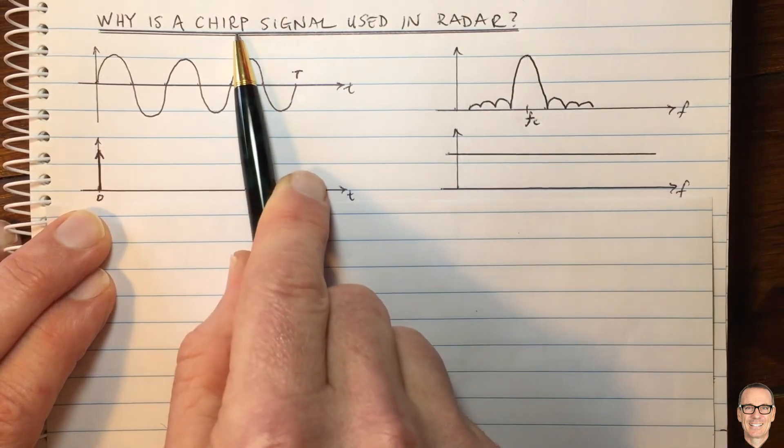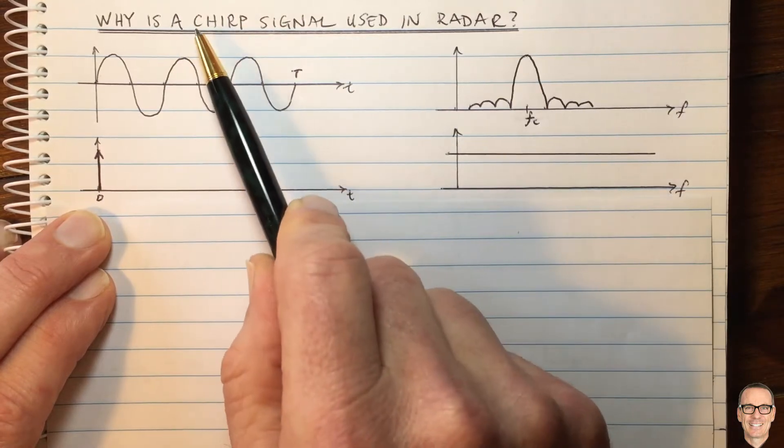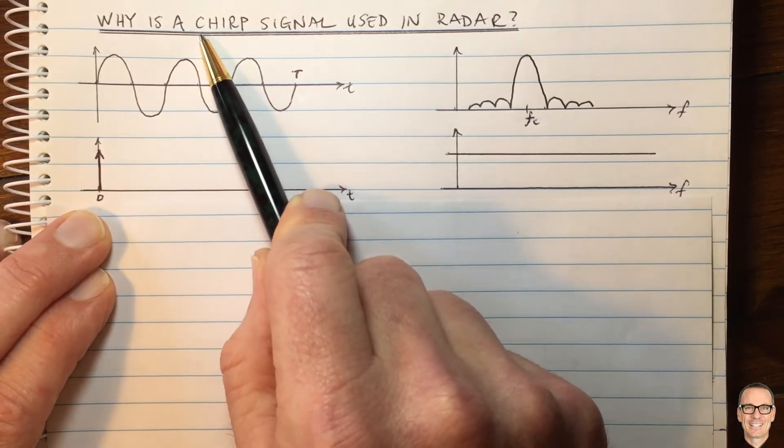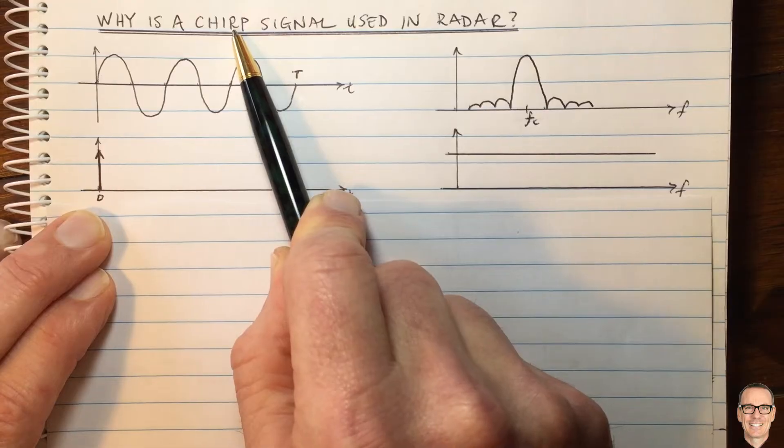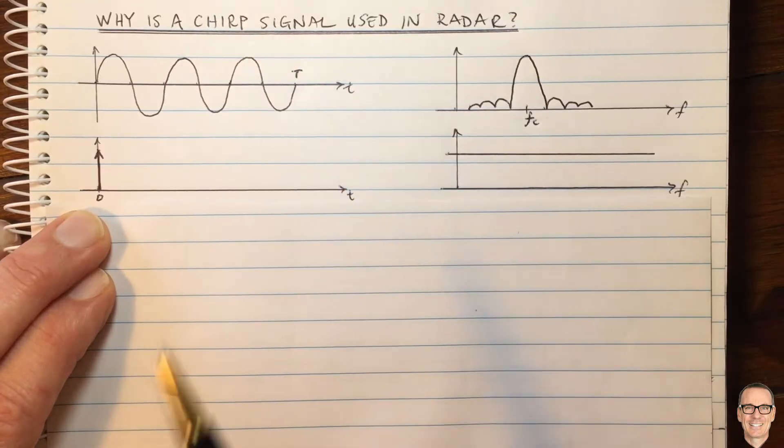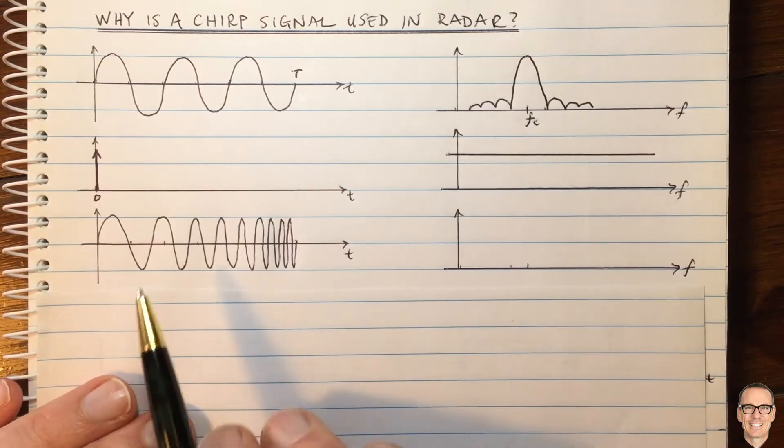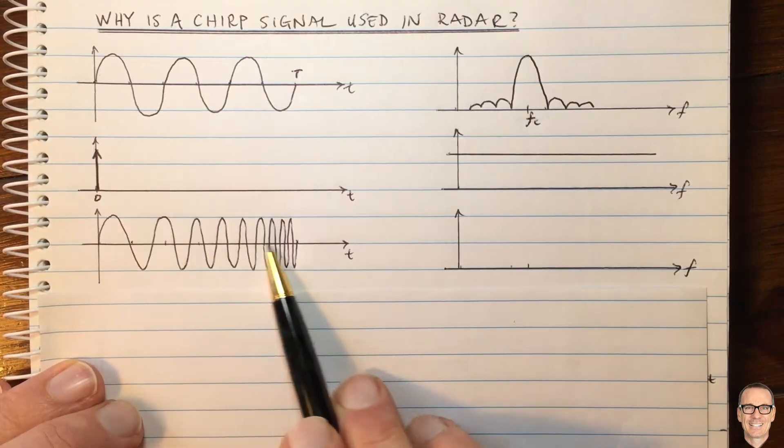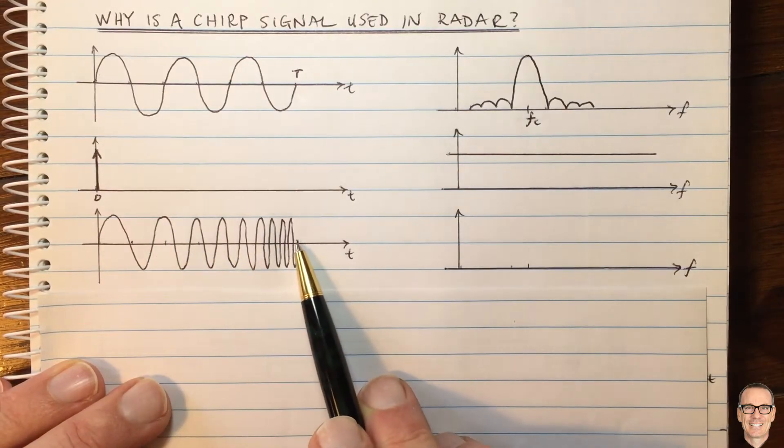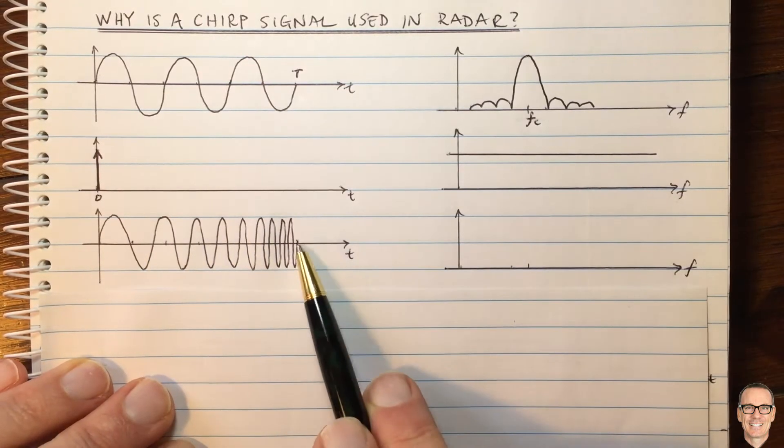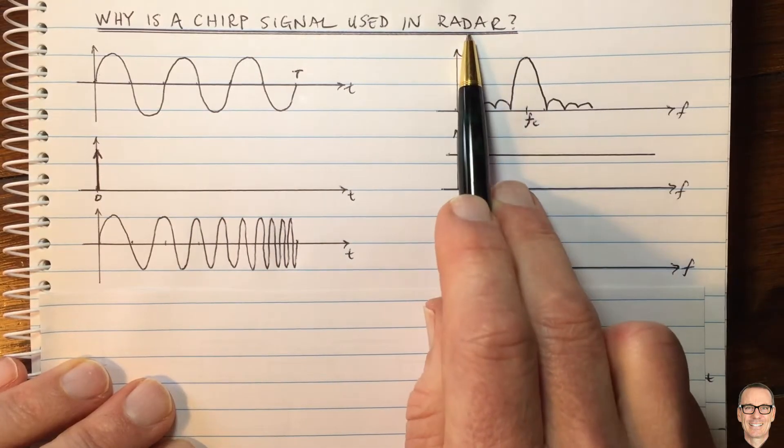So what can we do as a compromise between these two? And that's where we look at the CHIRP signal. CHIRP stands for Compressed High Resolution Pulse Radar. And this is what a CHIRP signal looks like. So as time goes on, the frequency increases. So why is this a good waveform for radar?